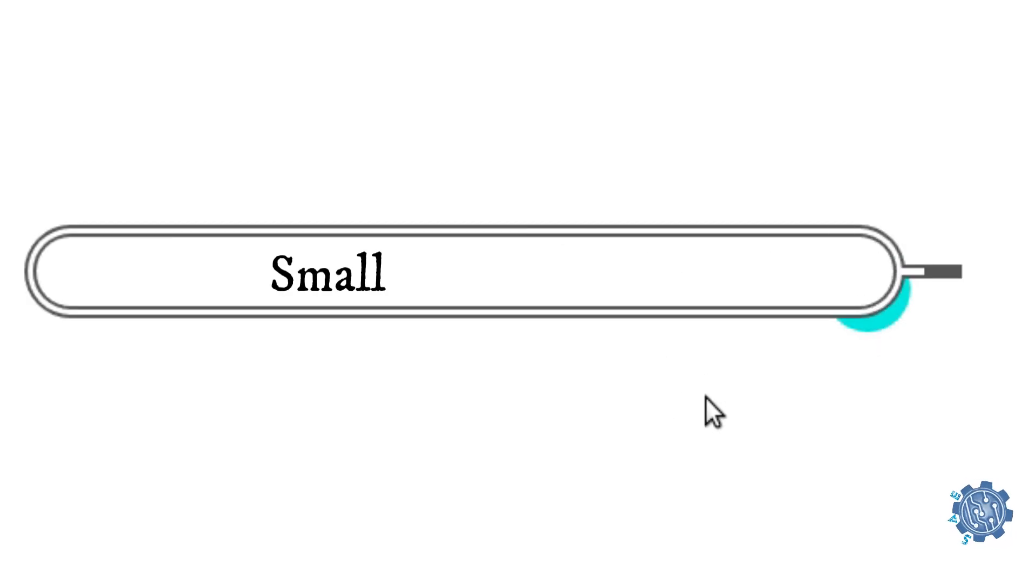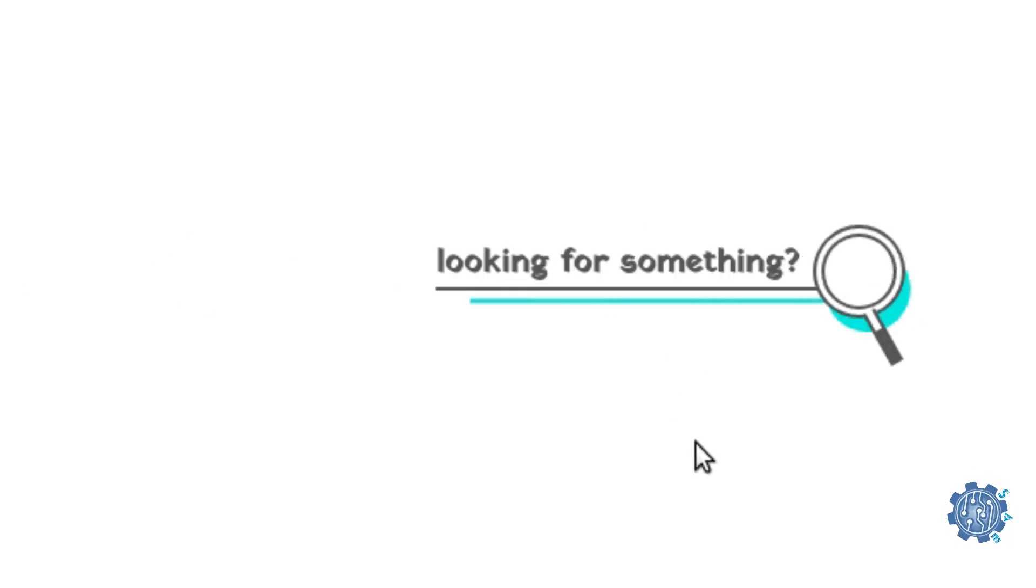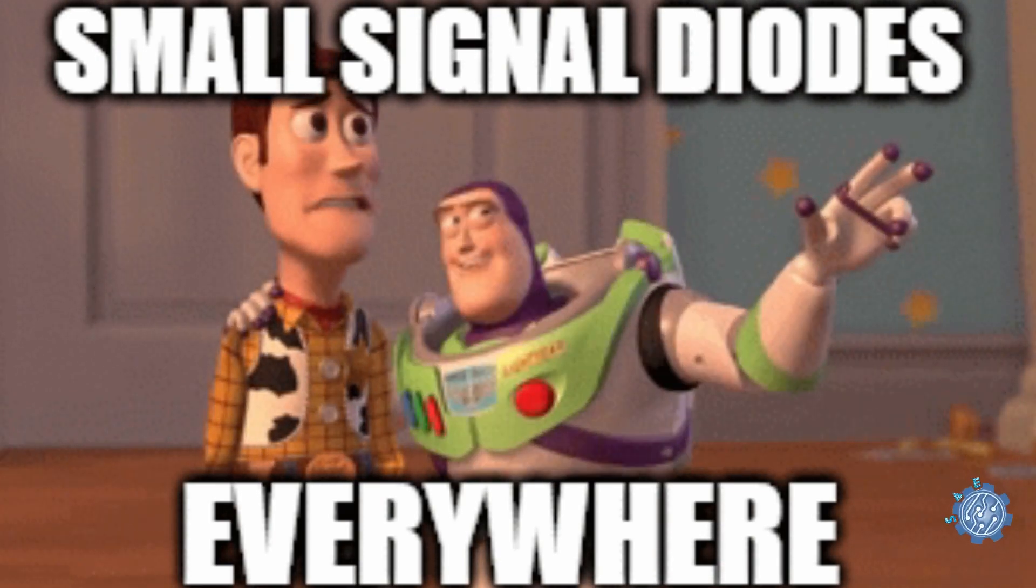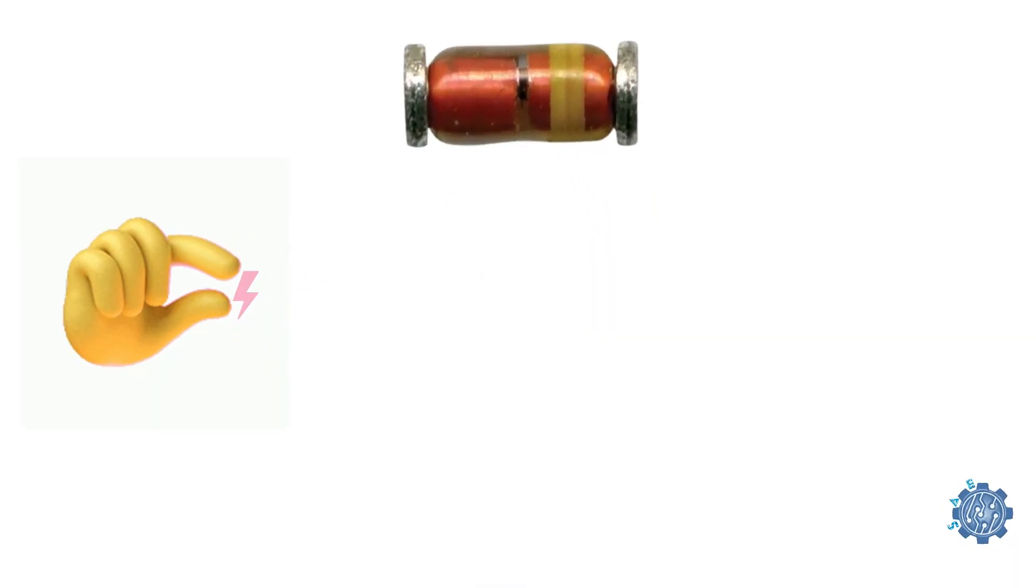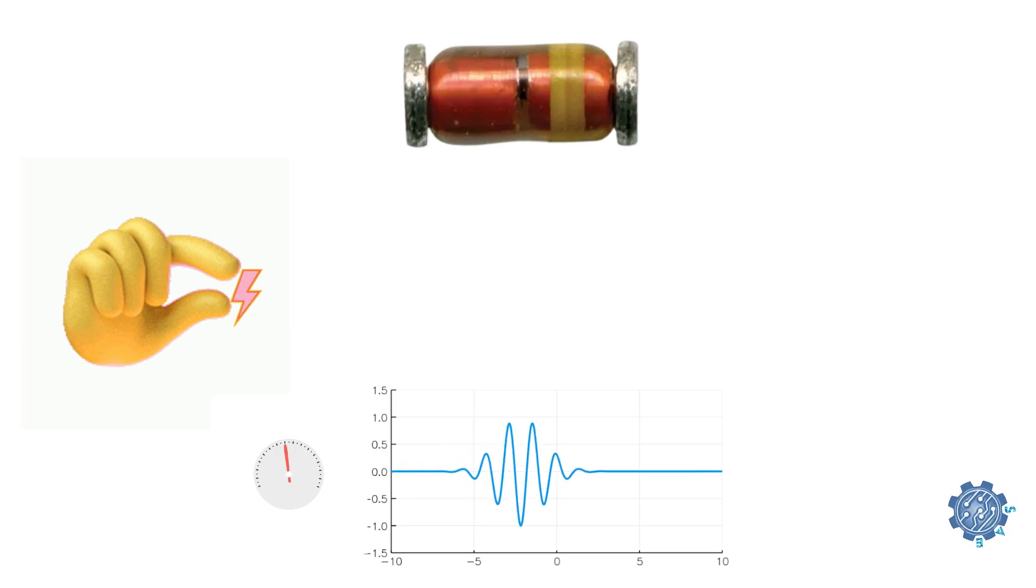The small signal diode is one of the most common types of diodes and is frequently used in electronic circuits. It is a small device that works with small currents and is suitable for high frequency applications.